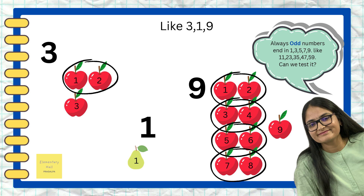Now always remember: odd numbers end with one, three, five, seven, and nine — like in numbers 11, 23, 35, 47, 59. Can you see the numbers end with one, three, five, seven, and nine? Can we test it? Yes, let's go!